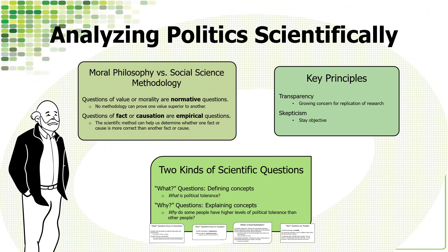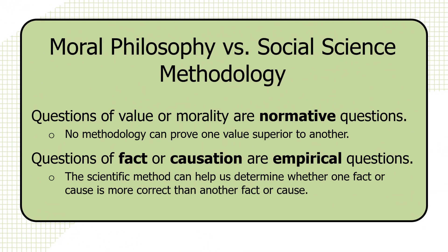I'm Philip Pollack, and this is The Essentials of Political Analysis. You've probably heard this distinction before: the distinction between normative questions — what ought to be — and empirical questions of fact and causation — what is, or what are the relationships.